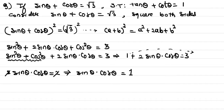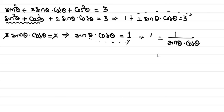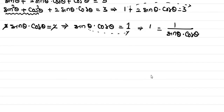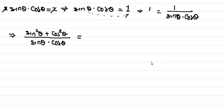Taking the reciprocal of both sides, we get 1 = 1 / (sin θ · cos θ). Now we replace the 1 in the numerator with sin²θ + cos²θ, giving us (sin²θ + cos²θ) / (sin θ · cos θ) = 1.